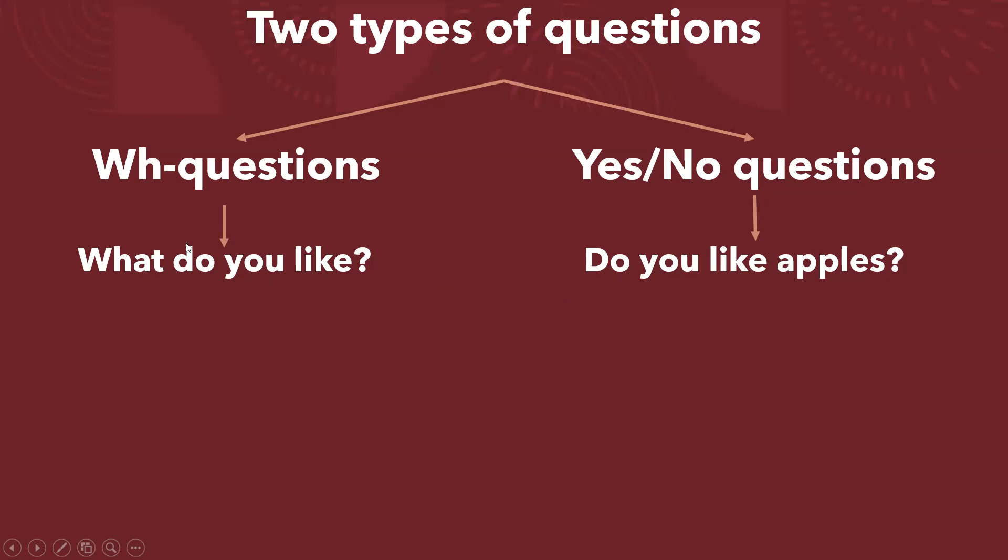¿Por qué? Porque a partir del auxiliar, chequen aquí el do, do, el you, que sería el sujeto, you, y el verbo que sería like, like es la estructura. Igual. Analicemos este caso.